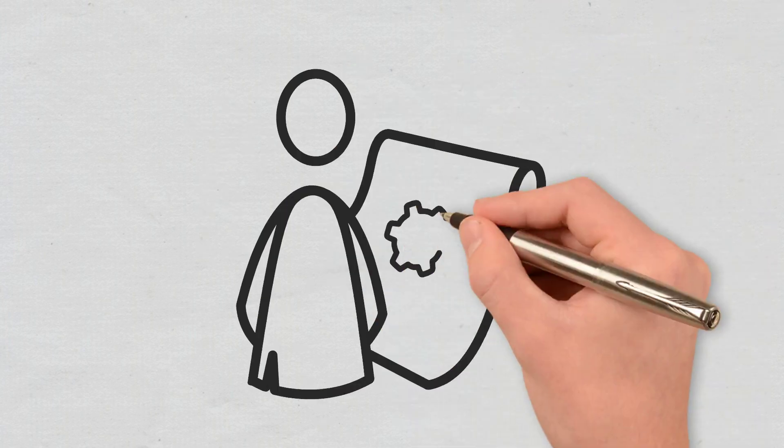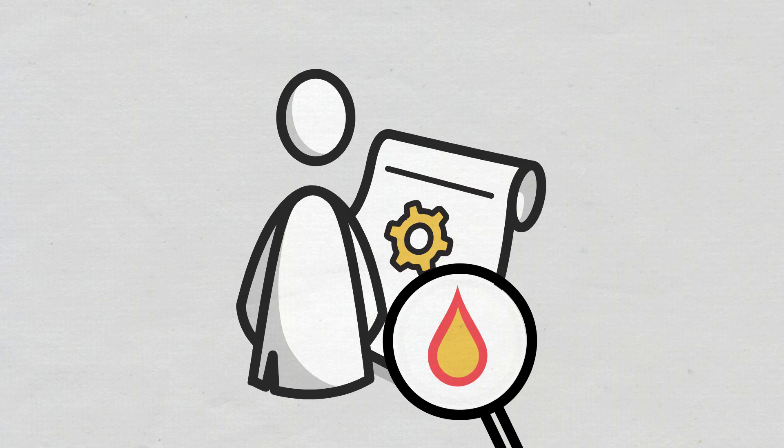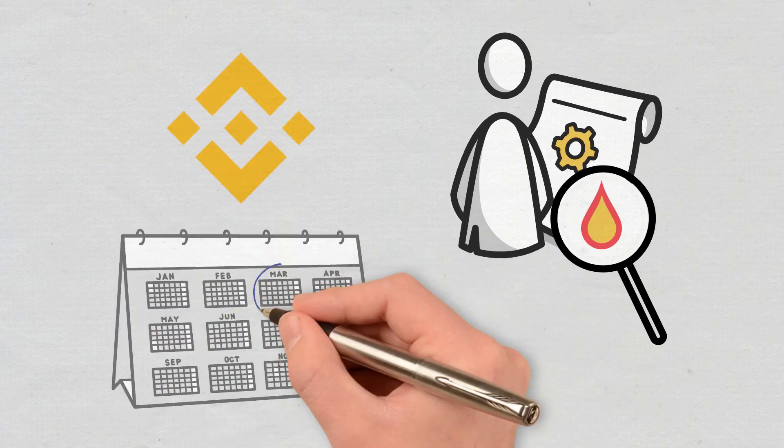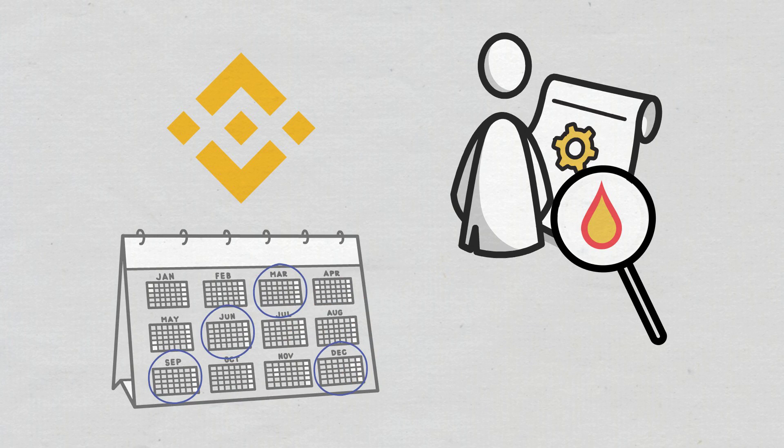Using the burn function that is included in the smart contract that issued the token. For example, Binance carries out regular quarterly burns and has committed to reaching 100 million burn BNB tokens.